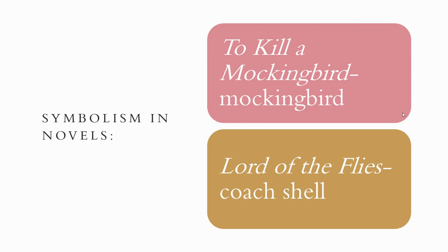Symbolism in novels: in To Kill a Mockingbird, a mockingbird is a symbol. The book has a famous line that reads, 'It is a sin to kill a mockingbird.' That's because the mockingbird symbolizes innocence. A mockingbird doesn't harm anyone, so we have to figure out which characters in the book are innocent and don't harm anyone — like Tom Robinson and Boo Radley. The mockingbird symbolizes the innocence that represents those characters.